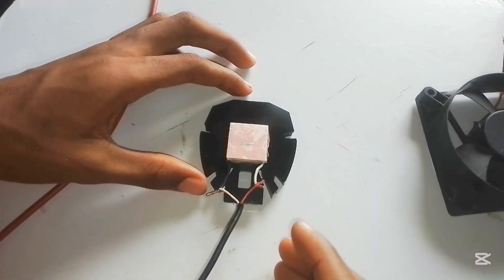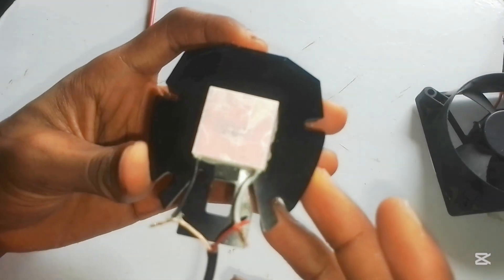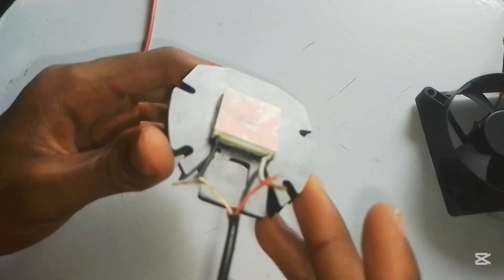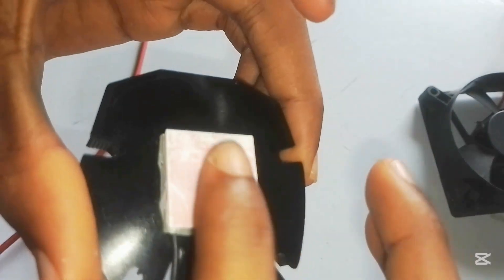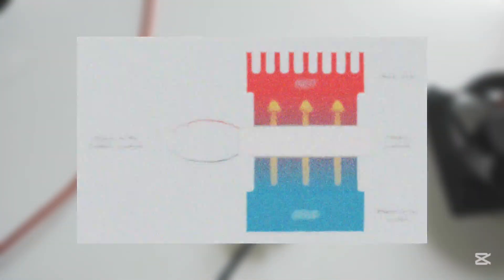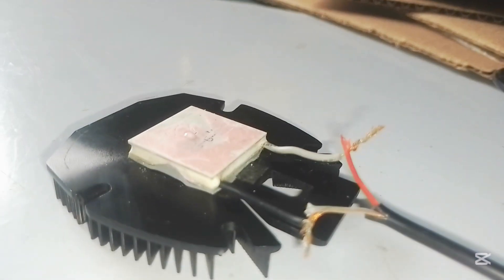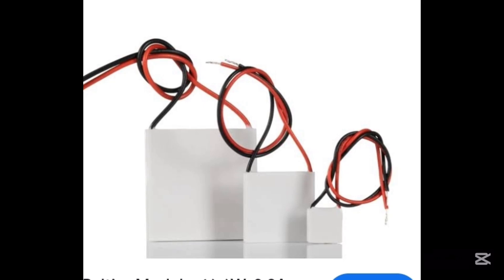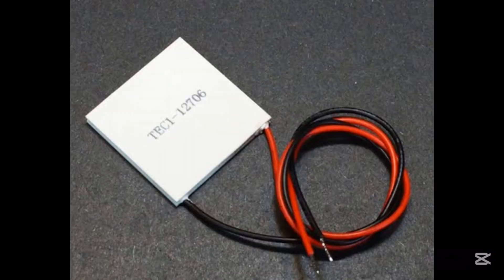Now we all know that the Peltier module is a solid state device that produces heat or cold depending on the current direction. When powered, it could produce heat on one side and actually produce cold at the other side. There are a lot of Peltier models depending on the current draw and voltage.